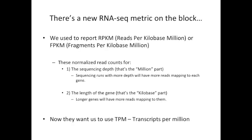There's a new RNA-seq metric on the block. We used to report RPKM, or reads per kilobase million, or FPKM, fragments per kilobase million. These normalized read counts for the sequencing depth — that's the million part — because sequencing runs with more depth will have more reads mapping to each gene, and we don't want that to bias our analysis. The other thing these metrics normalize for are the lengths of genes — that's the kilobase part. Longer genes will naturally have more reads mapping to them than shorter genes, and it's important to remove that bias from the analysis as well.